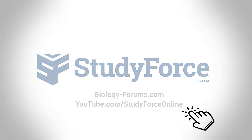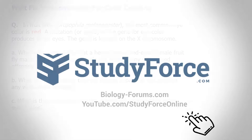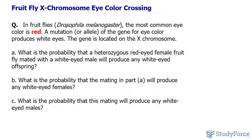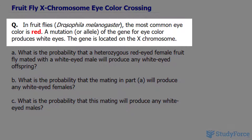In this lesson, we'll learn how to determine the probability of a certain eye color that appears in fruit flies. The question reads: in fruit flies, namely Drosophila melanogaster, the most common eye color is red. A mutation or allele of the gene for eye color produces white eyes. The gene is located on the X chromosome, which means that for fruit flies, eye color is a sex-linked trait.